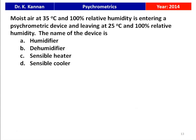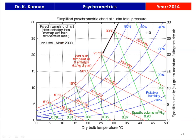The next question is from the 2014 question paper. Moist air at 35°C and 100 percent relative humidity enters a psychrometric device and leaves at 25°C, again at 100 percent relative humidity. The name of the device is: humidifier, dehumidifier, or sensible cooler? The relative humidity remains the same at 100 percent, but the temperature decreases from 35°C to 25°C along the saturation line — this is a dehumidification process, involving removal of water vapor.